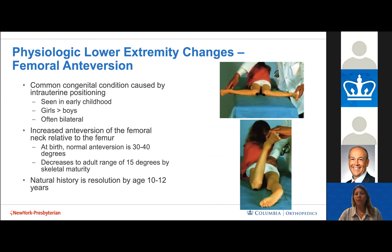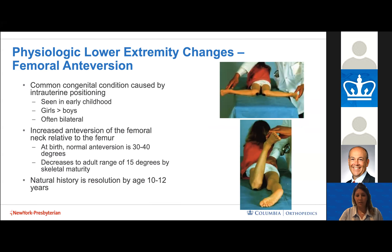Femoral anteversion is a common congenital condition caused by intrauterine positioning, often seen in early childhood, more common in girls, and often bilateral. The pathology is increased anteversion of the femoral neck relative to the femur — normally 30 to 40 degrees at birth, decreasing to the adult level of 15 degrees by skeletal maturity. The natural history is resolution by age 10 to 12.